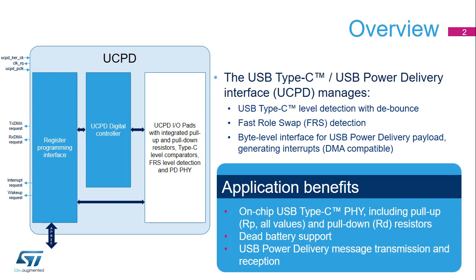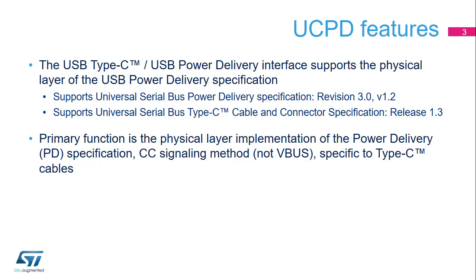The PD physical layer also appends and checks the CRC and manages the transmission of ordered sets. The application benefits include an integrated on-chip PD PHY including RP and RD resistors, dead battery mode support allowing connection detection at the peer device in case of a dead battery situation, and PD message transmission and reception where software is only in charge of handling the payloads. The UCPD controller is compliant with USB Power Delivery Revision 3.0 and USB Type-C Revision 1.3. Only the CC signaling method is supported, so the Type-C cable is required.